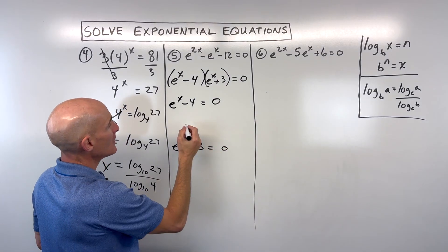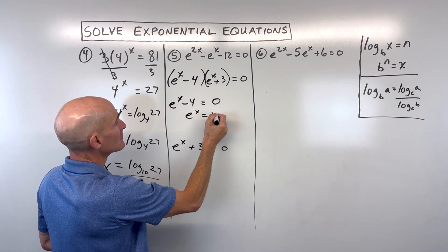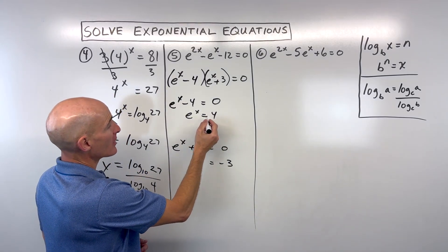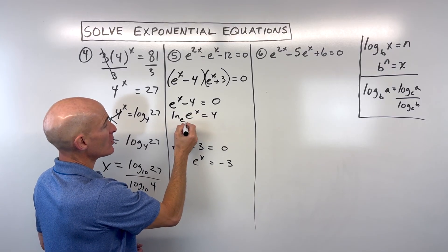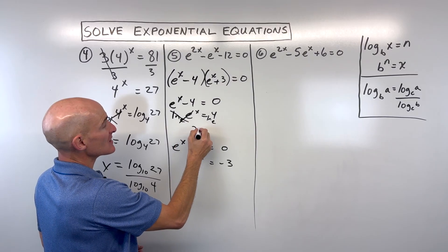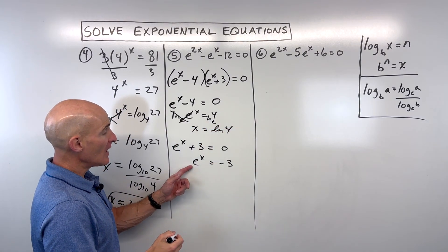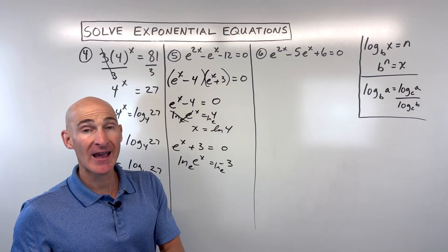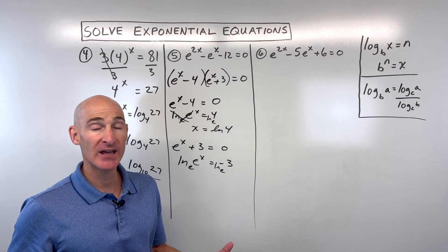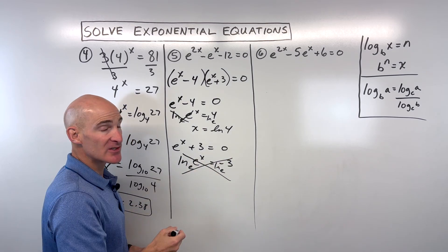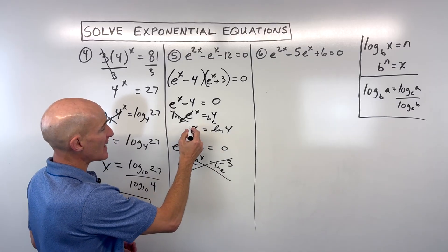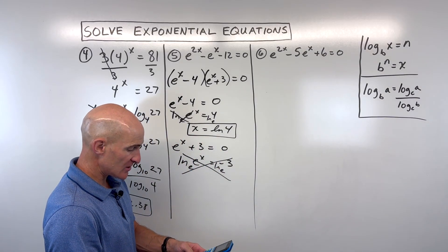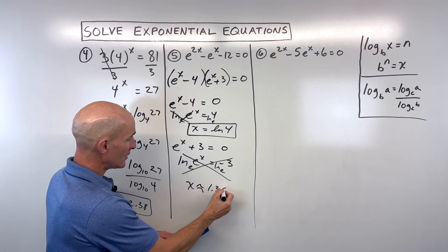Adding 4 to one side and subtracting 3 from the other, we take the natural log of both sides. The natural log and e are inverses, giving x equals natural log of 4. For the other equation, taking the natural log of negative 3 is undefined — you can't take the log of a negative number — so that's an extraneous solution and we throw it out. The exact answer is x equals natural log of 4, which is approximately 1.39.